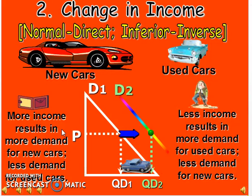Now, how does a change in income affect the demand curve? We have some basic concepts of normal and inferior goods. Normal goods are those goods where, when your income increases, you buy more of those products. A change in income always has a direct or positive impact on normal goods.